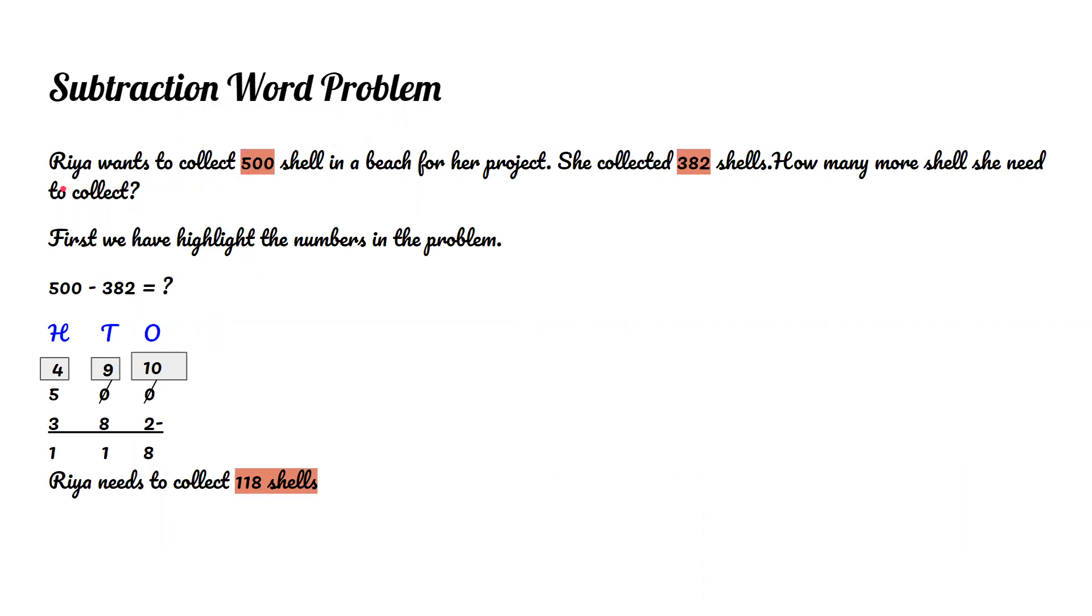Subtraction word problem. Ria wants to collect 500 shells on a beach for her project. She collected 382 shells. How many more shells does she need to collect? First, we highlight the numbers in the problem: 500 and 382. Since the 0 in the ones place is less than the 2, we go to the hundreds place and make the 5 a 4, the 0 in the tens place a 9, and 0 in the ones place a 10. 10 minus 2 equals 8. 9 minus 8 equals 1. 4 minus 3, 1. So Ria needs to collect 118 more shells.